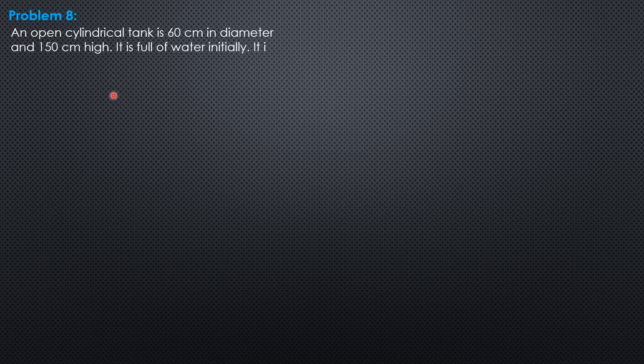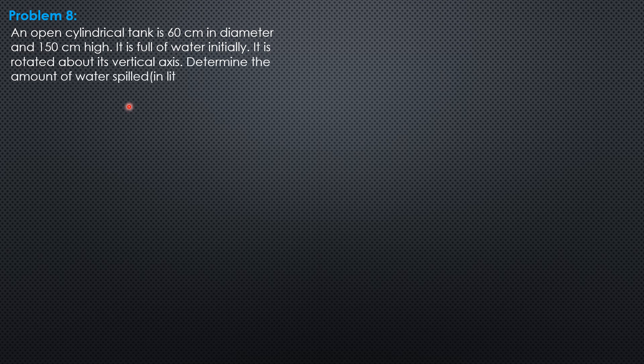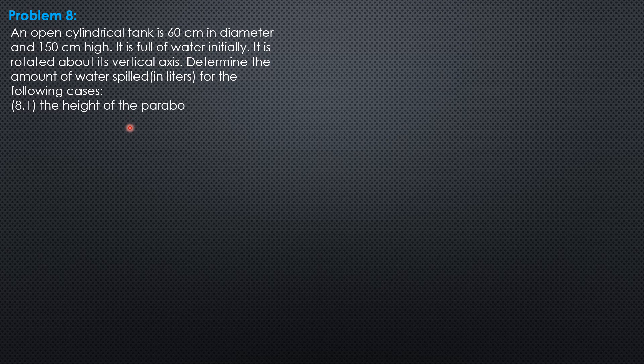Hello everyone, this video presents the solution to example 8 on rotated vessels. So here is the problem. An open cylindrical tank is 60 cm in diameter and 150 cm high. It is full of water initially. It is rotated about its vertical axis. Determine the amount of water spilled in liters for the following cases.